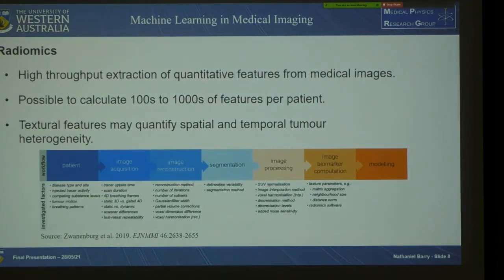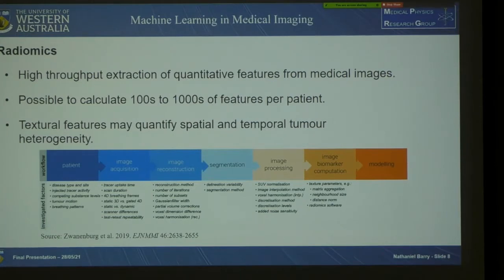In parallel, the field of radiomics has developed, which is the high-throughput extraction of quantitative features from medical images, allowing us to extract hundreds to thousands of features per patient. It's suspected that textural features may quantify spatial and temporal tumour heterogeneity in ways that methods like a biopsy can't. This is a typical radiomics workflow, and you can see there's a large number of factors that can affect the extraction of features up until that extraction point.